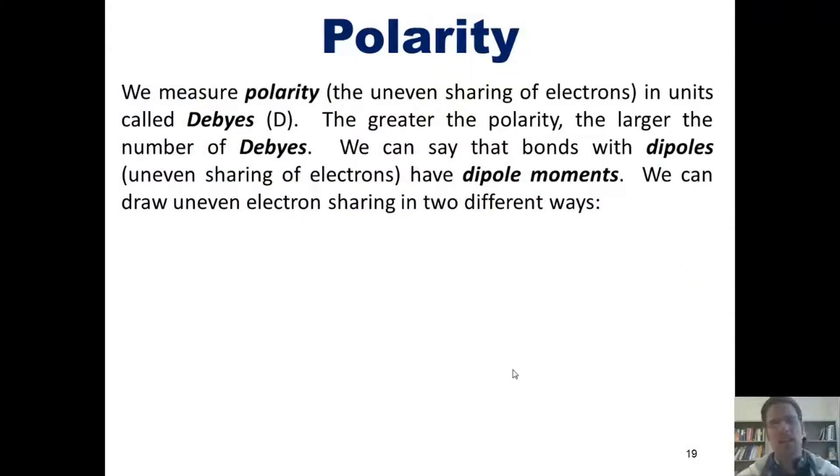We can say, then, that bonds with dipoles, that is, an uneven sharing of electrons, have dipole moments. We can draw uneven electron sharing in two different ways. In one of them, we show this Greek symbol delta, with a negative next to it, adjacent to the atom that has a strong partial negative charge, the more electronegative atom. And we draw the same symbol with a positive next to it, adjacent to the atom that is less electronegative, and therefore has the more partial positive charge.